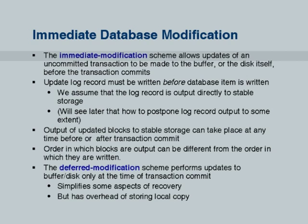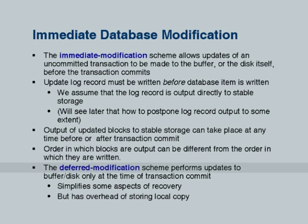With immediate modification, the buffer may have uncommitted updates and those may also be written to disk. So the log must have enough information to allow a rollback. Deferred modification simplifies some aspects of recovery but has extra overhead; we are not going to consider it for the moment, though optimizations to the recovery algorithm are possible.